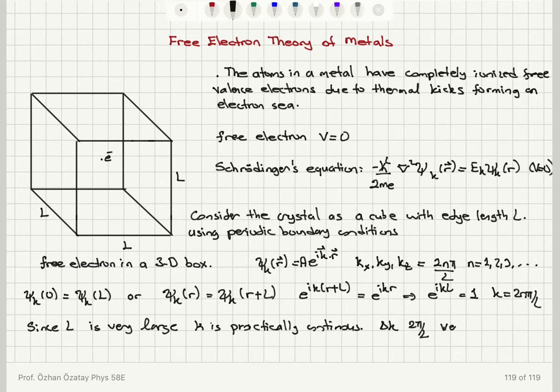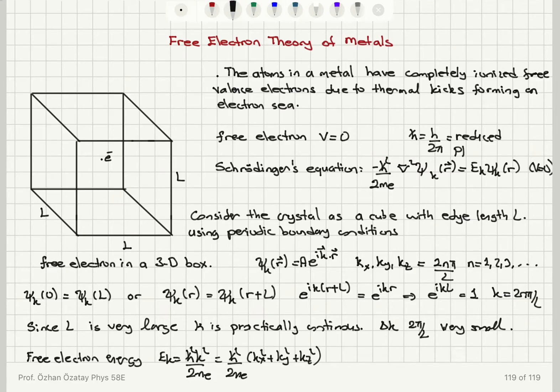The free electron energies are given by ℏ²k²/(2m) which is ℏ²/(2m)(k_x² + k_y² + k_z²). Here remember that ℏ is h/(2π), it is reduced Planck's constant. Planck's constant is 6.63×10^(-34) joule seconds.